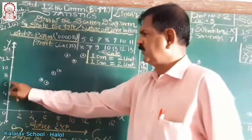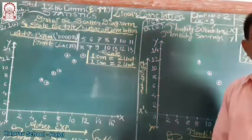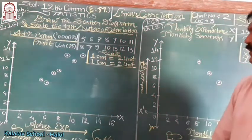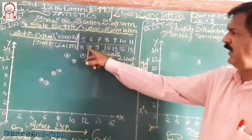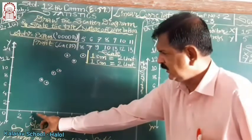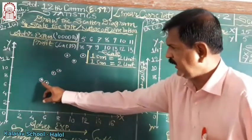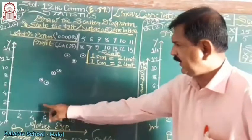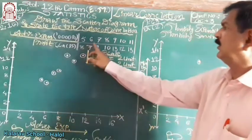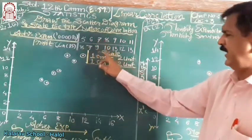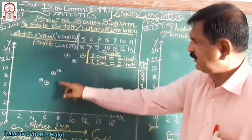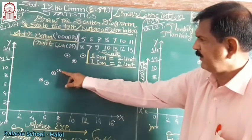On y-axis 2, 4, 6, then 8, 10, this is 8, this is 10, this is the point 8, 10.